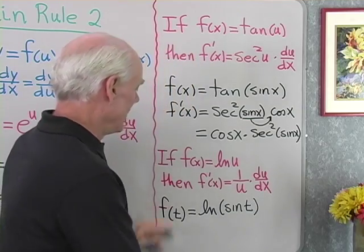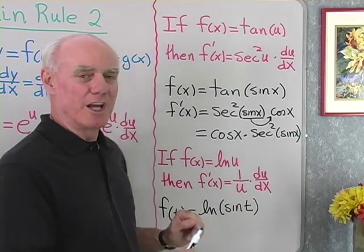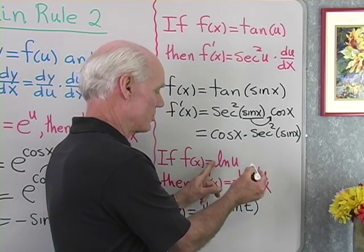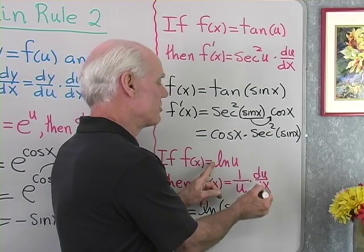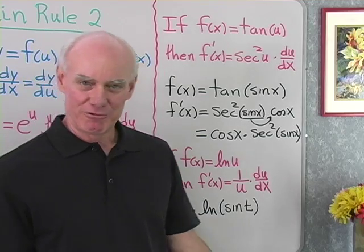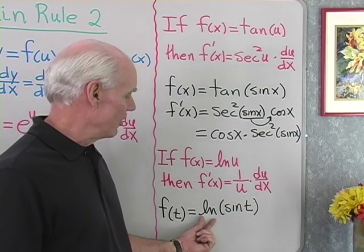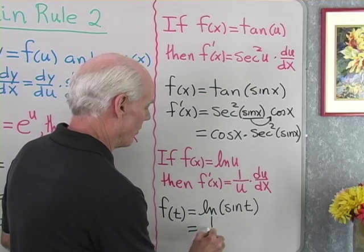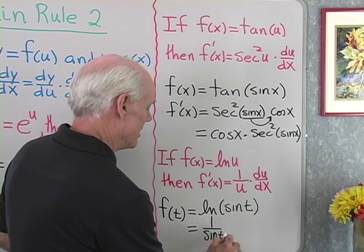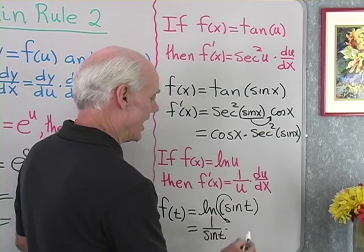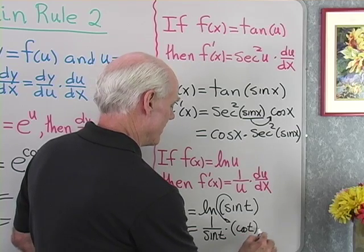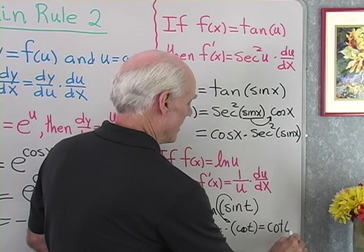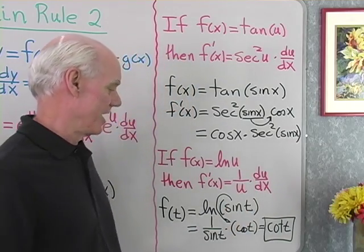Here's another problem. If f of x is log of u and u is a function of x, then the derivative of f with respect to x is just the derivative of log, which is 1 over u, times the derivative of u with respect to x. For instance, if we have f of t as the log of the sine of t, when I differentiate this, I get 1 over sine t, then I have to differentiate sine and get cosine t. So what's this? Cosine divided by sine — that's cotangent t, if you want to use that trig identity.